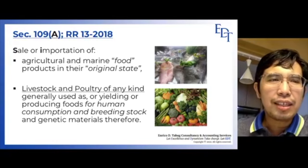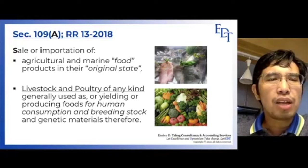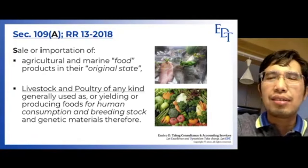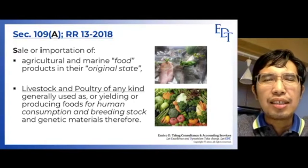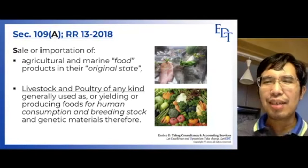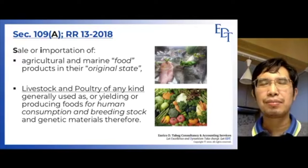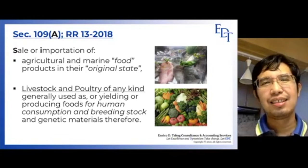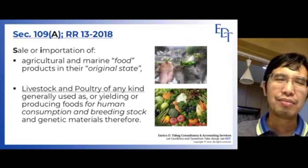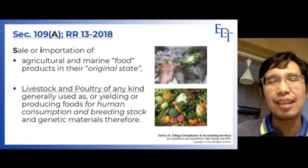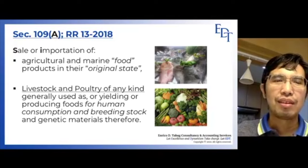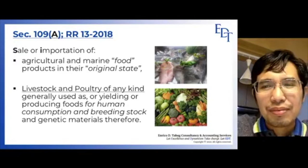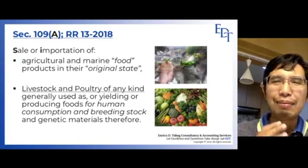The other item under section 109A pertains to livestock and poultry of any kind. When we say livestock and poultry, we are pertaining to animals intended for human consumption. During ECQ, mayors and barangay chairmen were giving away live chickens — that chicken falls under livestock and poultry because it is an animal intended for human consumption, so that will be exempt from VAT. Rice given away falls under agricultural food original state.